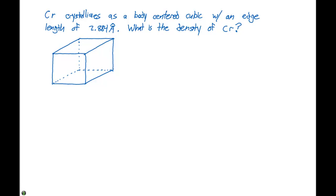We need to figure out what a body-centered cubic is. A body-centered cubic is going to have atoms on the eight corners of the unit cell, and there's also going to be an atom directly in the middle of the unit cell.